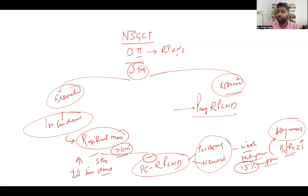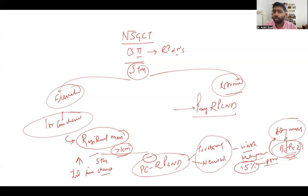If you do a post-chemo RPLND and find viable malignancy on histology, this is a poor prognostic marker — it means cancer remains after first-line chemotherapy, indicating poor overall survival. In that case, you consider offering the patient adjuvant chemotherapy with BEP two cycles. For your exam, remember: if there is a residual mass after first-line chemotherapy and markers are normal, offer post-chemo RPLND. If it turns out to be viable malignancy, offer two cycles of adjuvant BEP.